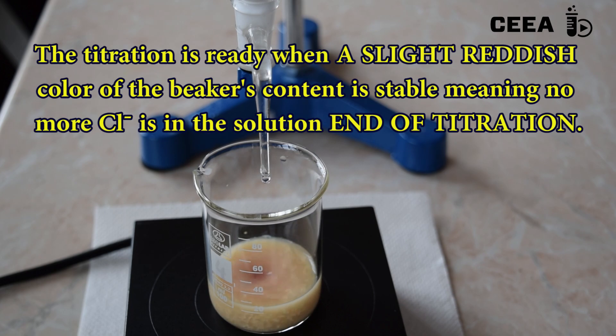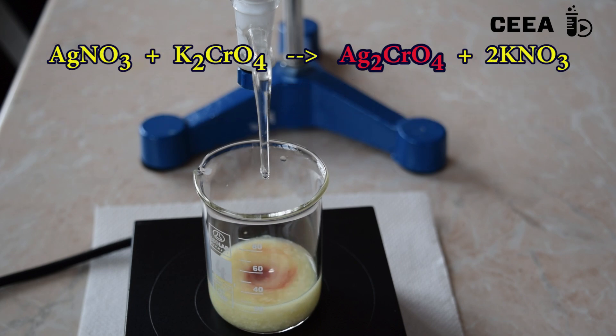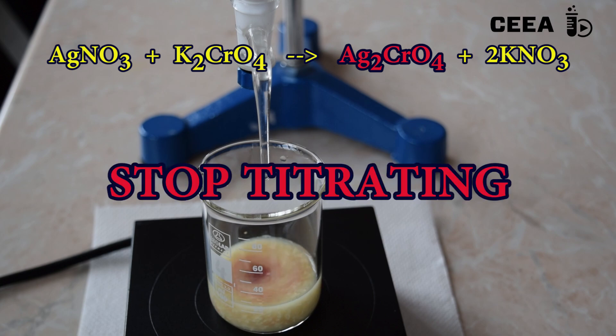The titration is ready when a slight reddish color in the sample is stable. This is due to the red silver chromate precipitate which forms only after the entire amount of chloride was precipitated.